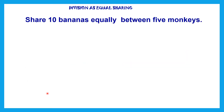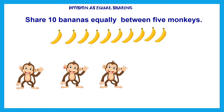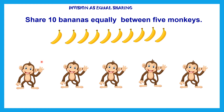Now let's see one more example for division as equal sharing. The example is: share ten bananas equally between five monkeys. Here we have ten bananas, and we are sharing these bananas among five monkeys.